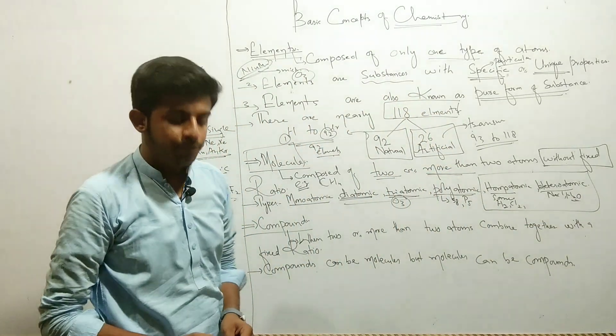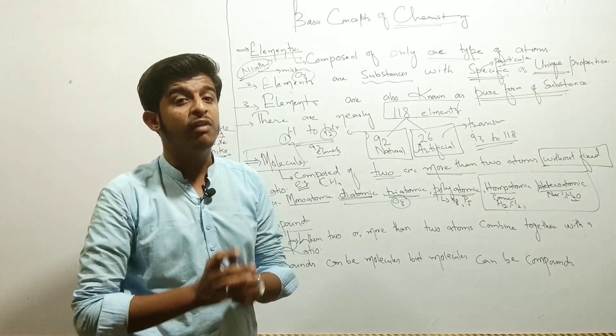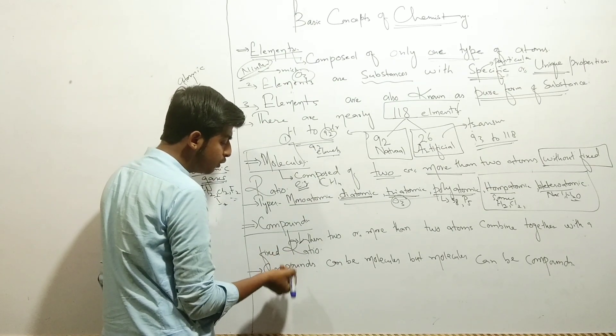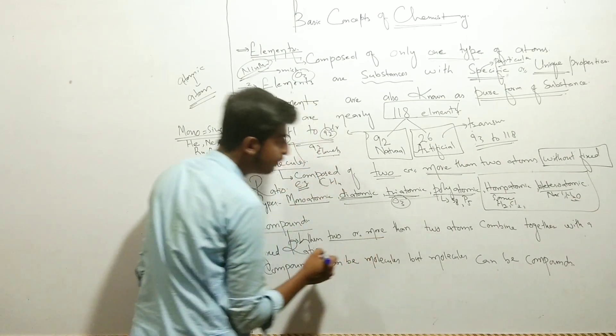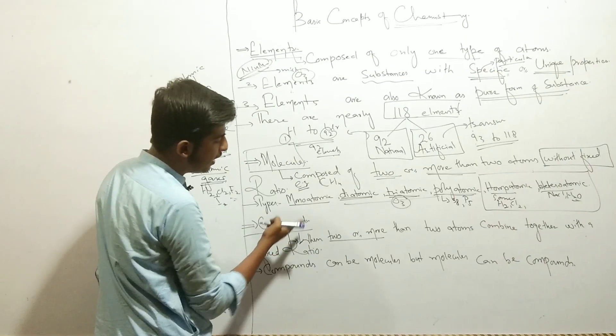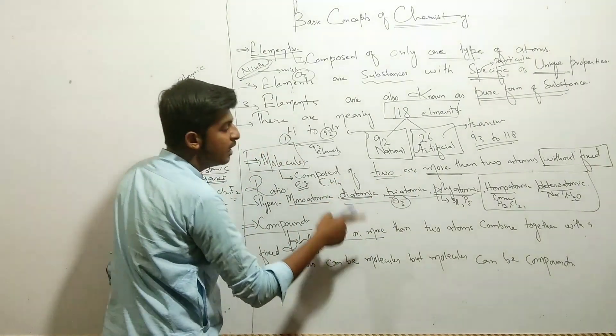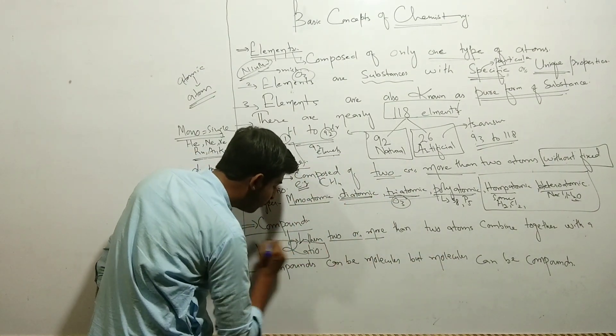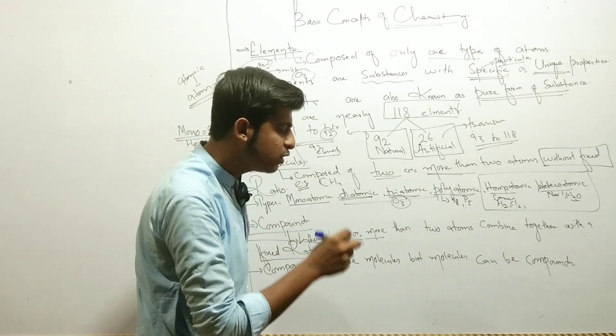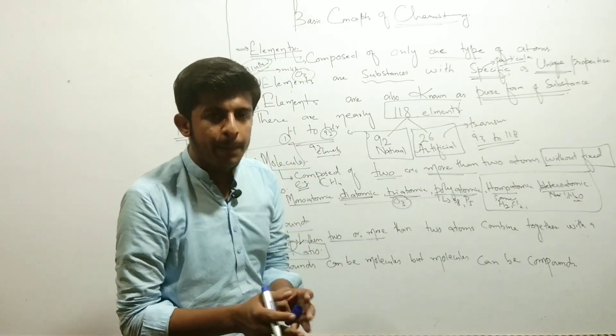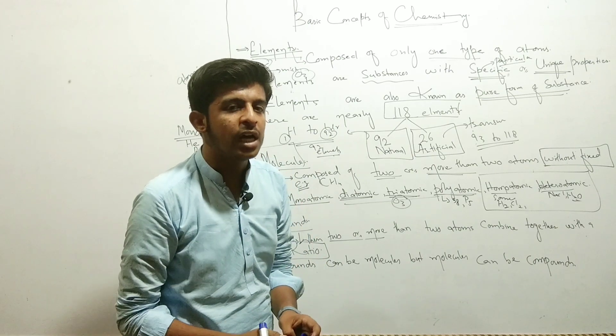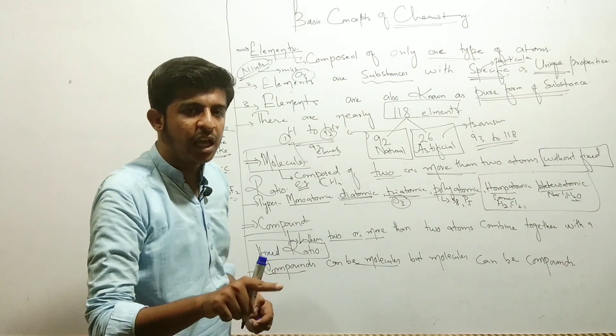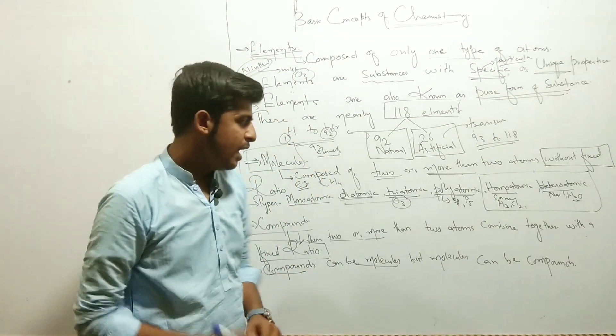After that, compound. So lots of students are being confused while defining the molecule and compound. Today your confusion will be cleared. Compounds are when two or more than two atoms combine together with a fixed ratio. Molecules can be without fixed ratio, but compounds combine with fixed ratio. Whenever atoms combine chemically in a compound, they combine with fixed ratio. Compounds can be molecules, but molecules are not necessarily compounds.